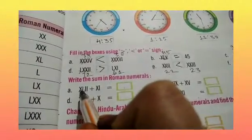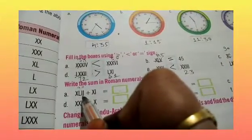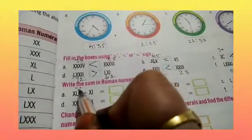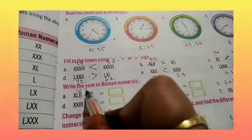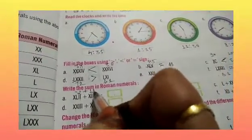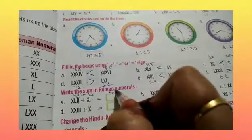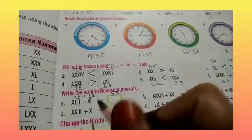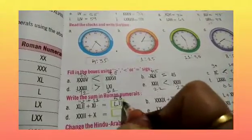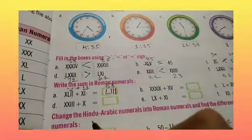So 50 minus 10 is 40 and 2 I's are given on the right hand side. This means plus 2 is 42. So plus 10 and 1 is 11. So 42 plus 11 is 53. So we will write 53 like this: L, I, I, I. So this is 53. Okay children? समझ में आया है नहीं?